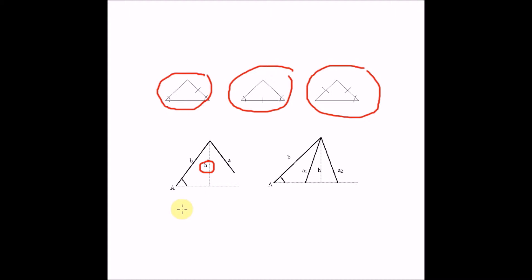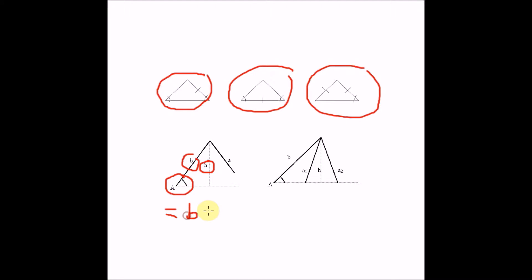But when we're given side-side-angle, that is when we have an ambiguous case. In those scenarios, we must find the height of the triangle. The height is equal to the side adjacent to the given angle multiplied by sine of the given angle — basically B times sine of A.